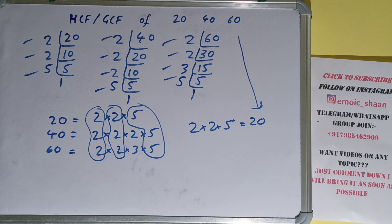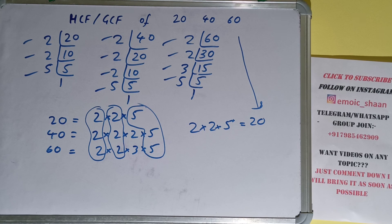So the HCF or GCF of 20, 40, and 60 is 20. If you found the video helpful, please hit the like button, consider subscribing, and thanks for watching.